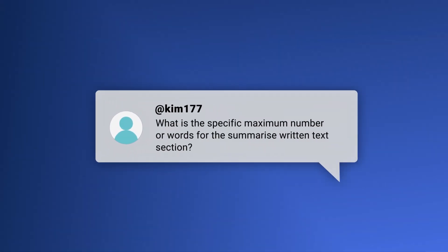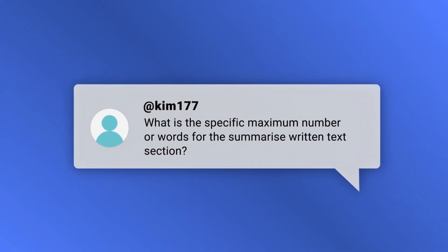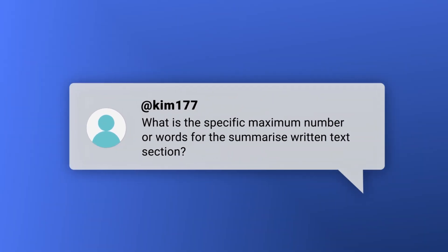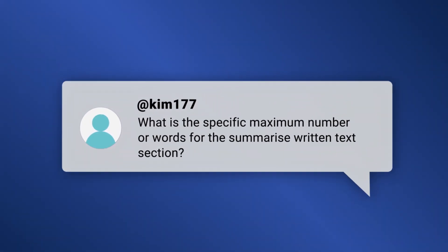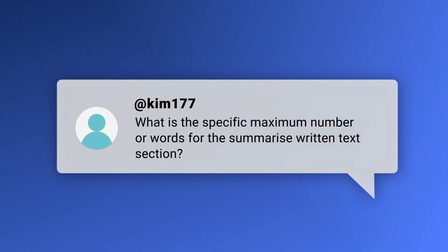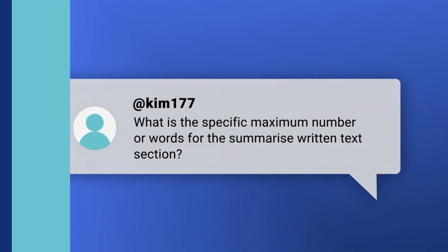Let's move on to another PTE writing question: What is the specific maximum number of words for the summarize written text section? In the summarize written text section, the maximum number is 75 words, though we usually recommend between 30 to 40 words for this task. For the essay, however, you should aim to write between 200 to 300 words.